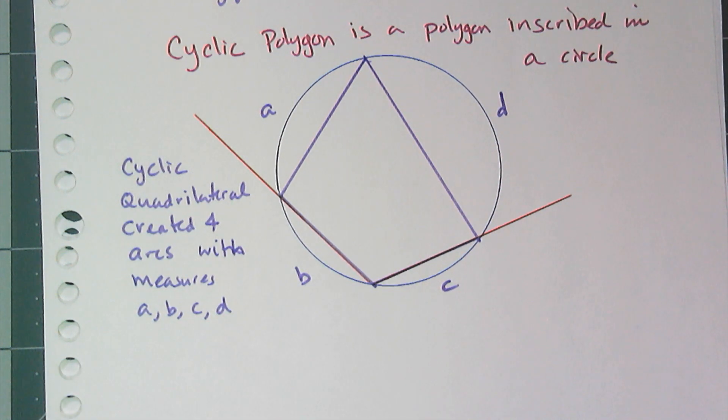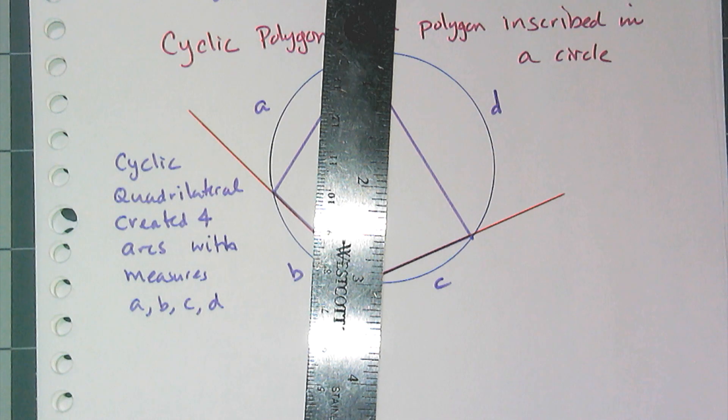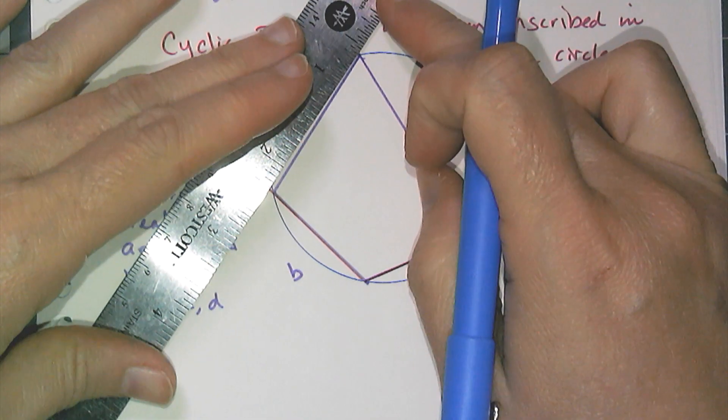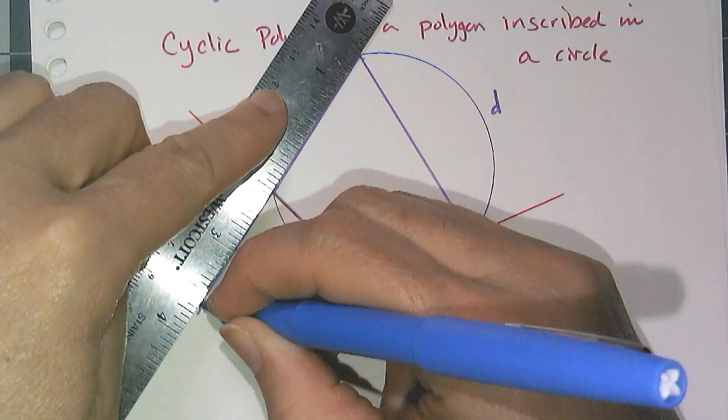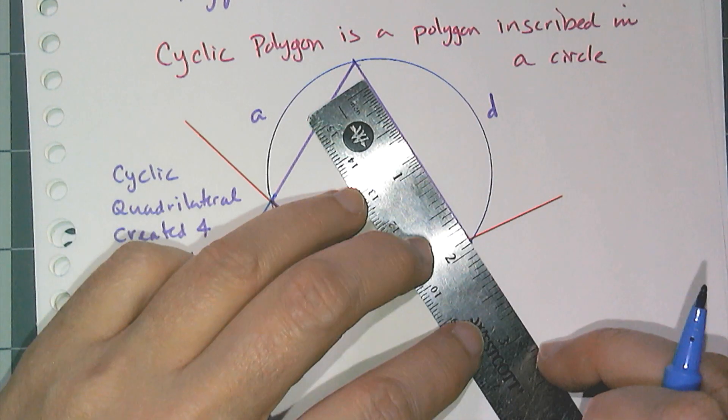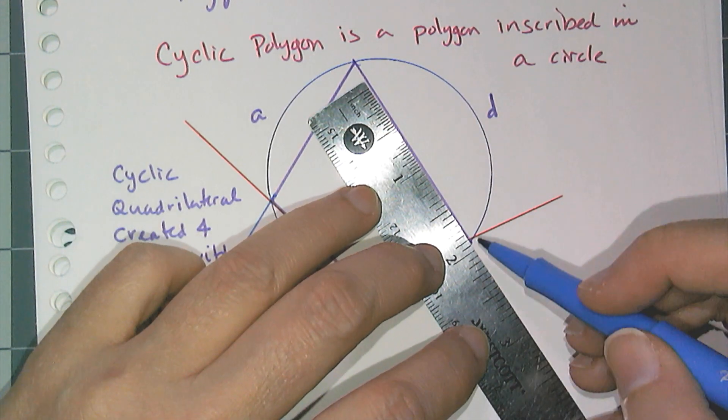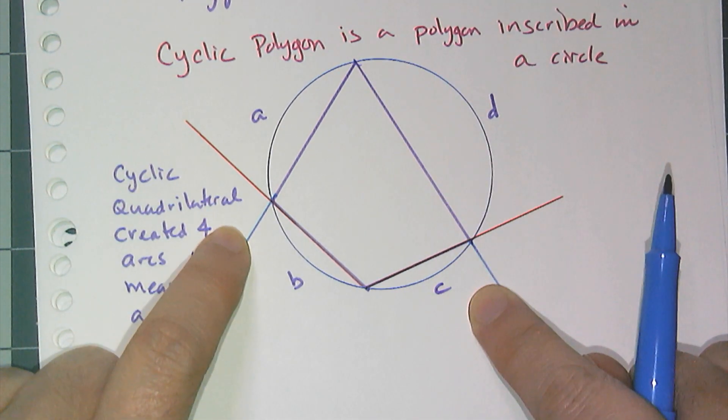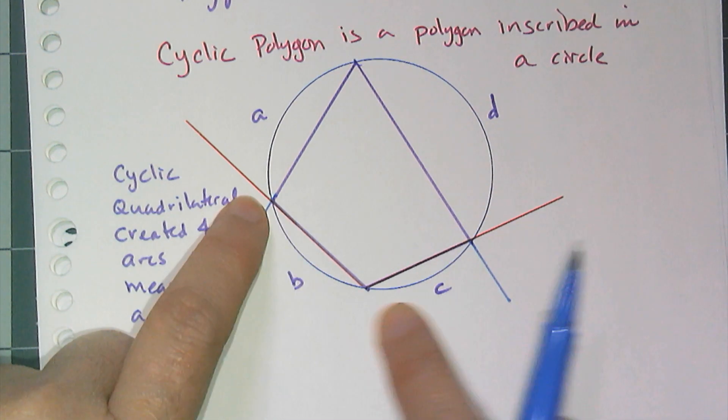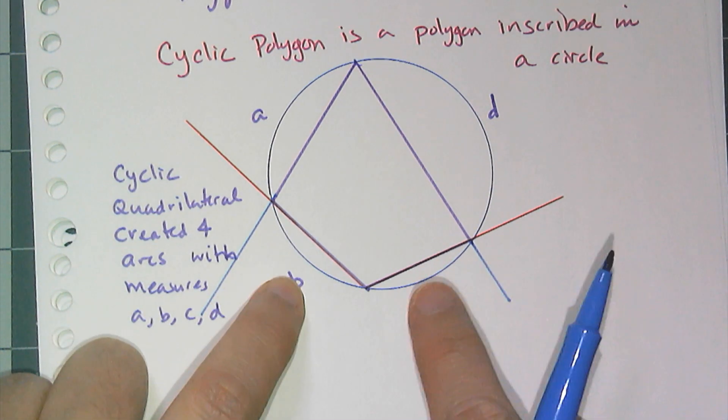And if I go to the other side, and I extend out these chords, in this case I'm making them rays, I will notice that this angle here is the inscribed angle for this arc that has a measure of b plus c.